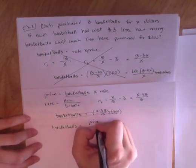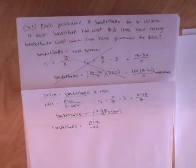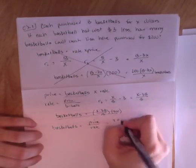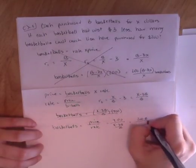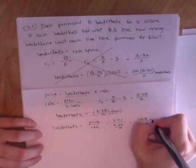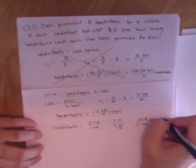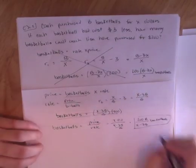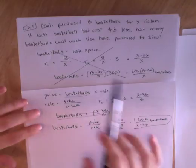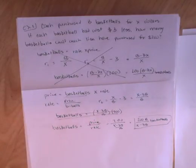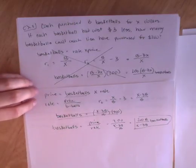Basketballs is price over rate. So it should be 200 over our rate, which gives me 200B over X minus 3B basketballs. There we go. Now, a good way to check yourself when you're doing this is you can write the units for every single piece. If we had done that here, we would have noticed that our units would not have canceled out to give me basketballs.